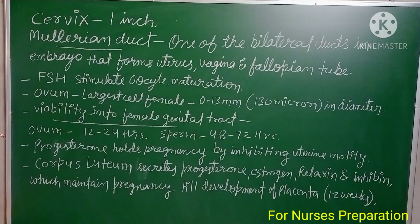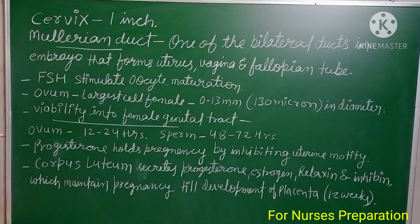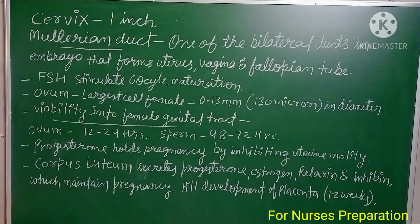Before the development of the placenta, pregnancy is maintained by the corpus luteum. To maintain the pregnancy, the corpus luteum secretes progesterone, estrogen, relaxin, and inhibin hormone.